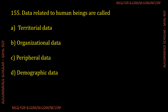Question number 155: Data related to human beings are called what? The options are: territorial data, organizational data, peripheral data, and demographic data. The correct answer is demographic data — Option D is the correct answer for the given question.